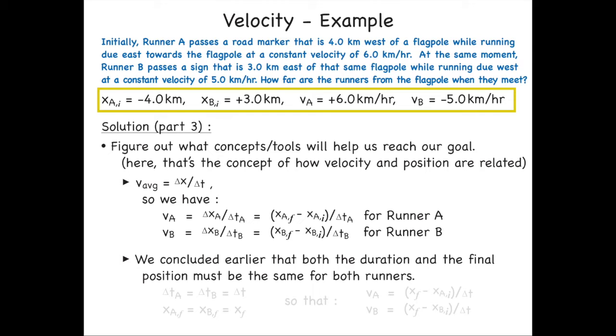But we concluded earlier that both the duration and the final position have to be the same for both runners. That's what it means for them to meet. So what we're saying mathematically is the duration for runner A has to equal the duration for runner B. So we'll make life easy and drop the subscripts. We'll just call it delta t. It's the same delta t for both of them. Similarly, the final position for runner A has to be the final position for runner B. So we'll just say that's the final position for both of them.